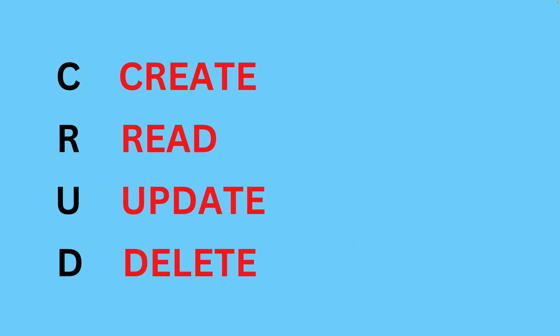Now let's talk about another concept called CRUD. This is a very important concept used over and over again in relational databases, and it may also be asked in interviews. CRUD is an acronym that stands for Create, Read, Update, and Delete. Using the Amazon example: you Create products, you Read products when accessing information on the Amazon website, if Amazon decides to Update the product description or price you use the U, and if you wanted to remove certain information from Amazon you would use the D, which is Delete.